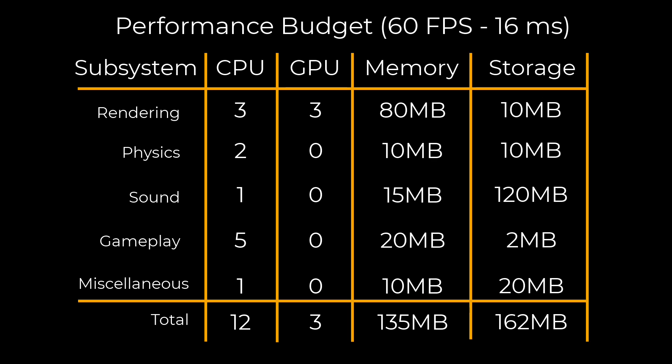Before we look at these five areas where you can get extra performance out of your Unity projects, we need to quickly look at what a performance budget is. It's basically a table of all the subsystems that run on the CPU and the GPU and how much time you're going to allocate to each. Instead of talking in frames per second, we talk in milliseconds allocated per system — for 60 frames per second, that comes down to 16 milliseconds per frame.